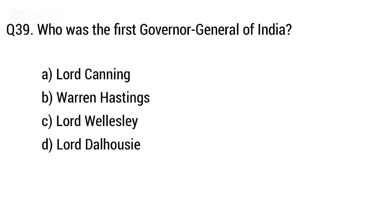Question 39: Who was the first Governor General of India? The right answer is option B: Warren Hastings.